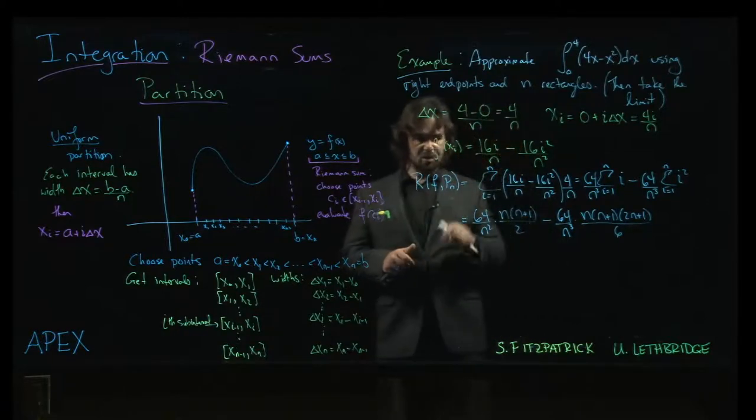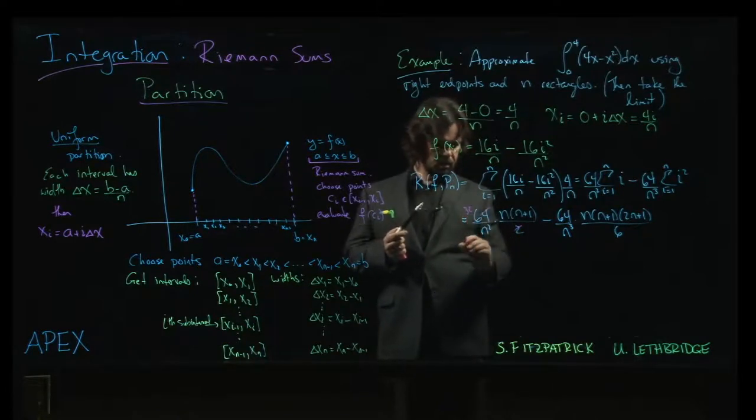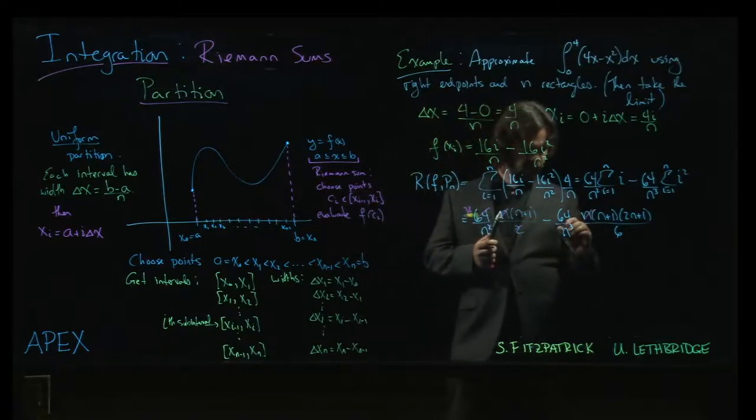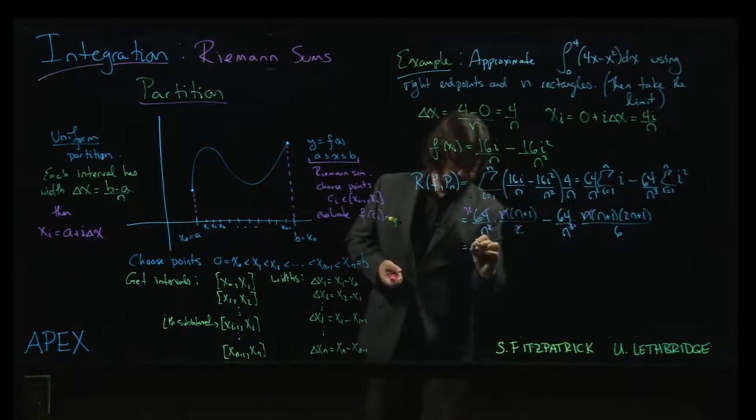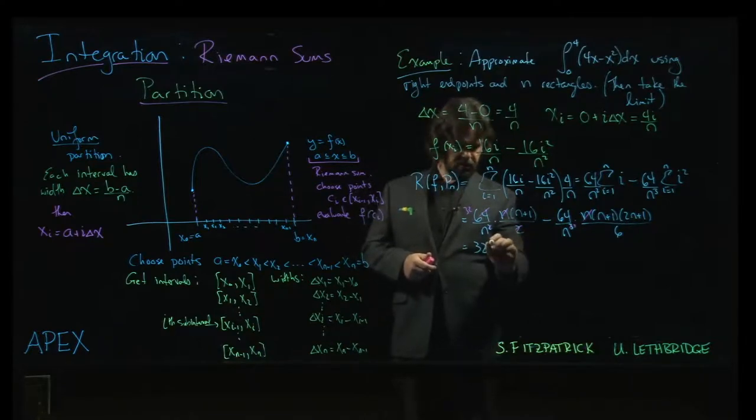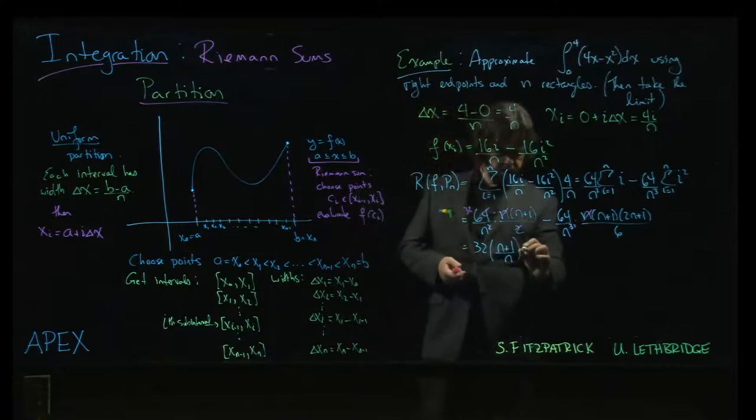Alright, so here you do a little bit of cleaning up. So what I'm going to do is, we can cancel it, that's 32. Cancel that. I can cancel this with one of those two n's. What I'm going to get is 32 times n plus 1 over n, minus